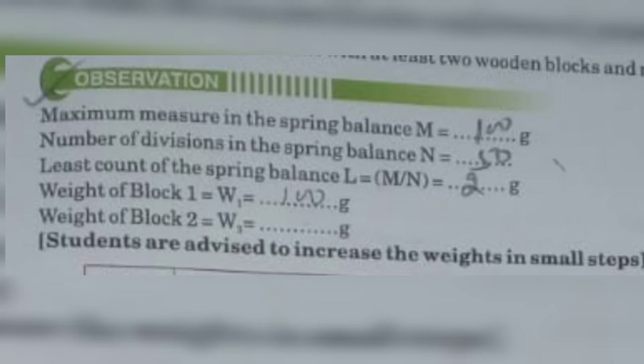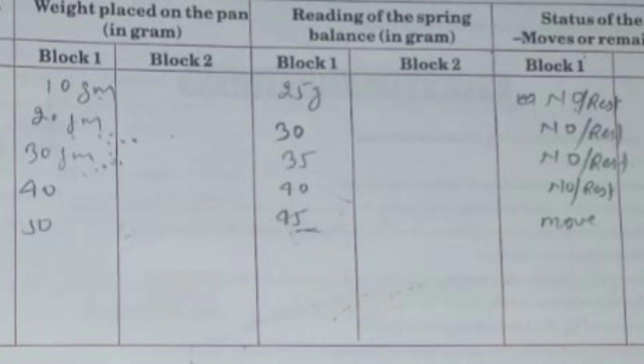The weight of the first block is 100 grams. In the observation table: when the weight in the pan is 10 grams, the spring balance reads 25 grams and the wooden block remains at rest. When the pan weight is 20 grams, the spring balance reads 30 grams and the block remains at rest. With 30 grams in the pan, the spring balance reads 35 grams and the block remains at rest. With 40 grams in the pan, the spring balance reads 40 grams and the block remains at rest. When the weight in the pan is 50 grams, the spring balance reads 45 grams and the wooden block starts moving.